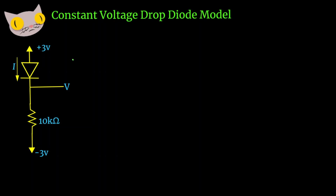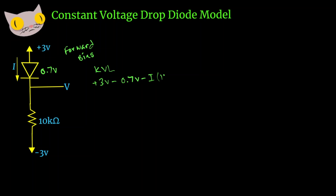Here we have another forward bias diode circuit. Remember, our voltage drop is going to be 0.7 volts and we can apply KVL to find our current and our voltage. Starting from the top again, we have 3 volts. We subtract 0.7 volts — our voltage drop — then subtract our current times our resistance, 10k ohms, and set that equal to the negative side, negative 3 volts.